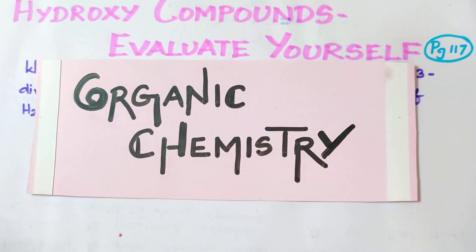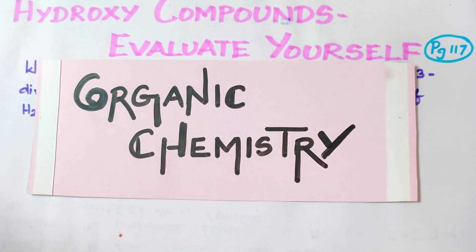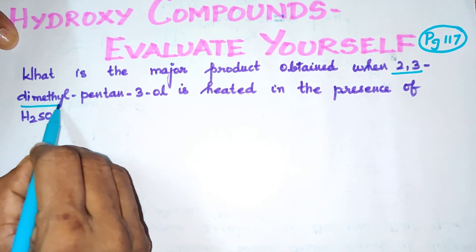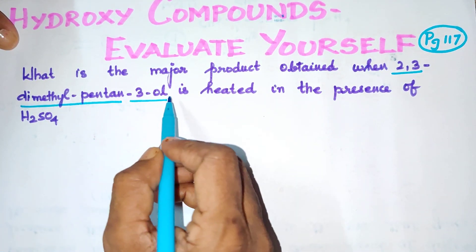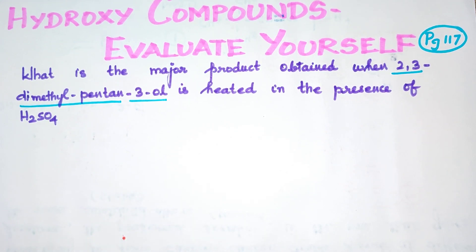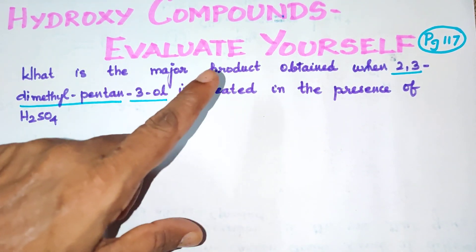In organic chemistry, under the hydroxy compounds chapter, in the 'Evaluate Yourself' section at page 117, let's discuss this question. The question asks: what is the major product obtained when 2,3-dimethylpentan-3-ol is heated in the presence of H₂SO₄?